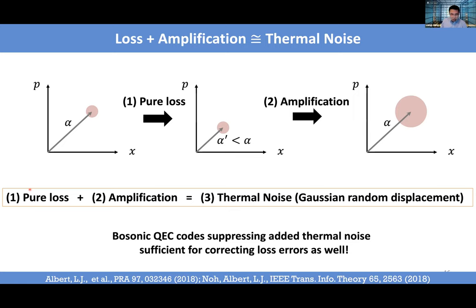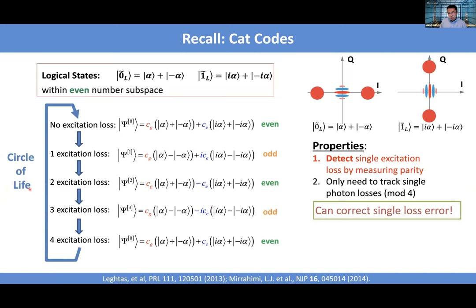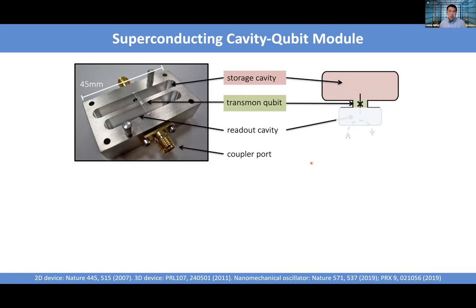Let me briefly describe how quantum error correction works for cat codes experimentally. We can monitor parity to track single photon loss errors. The key challenge is: how do we perform a quantum non-demolition (QND) measurement of parity without destroying the encoded state? In optics, photon number counting would destroy the entire state. We just need one classical bit of information — parity — without perturbing the system too much. The way to do this is to use a superconducting cavity-qubit module.